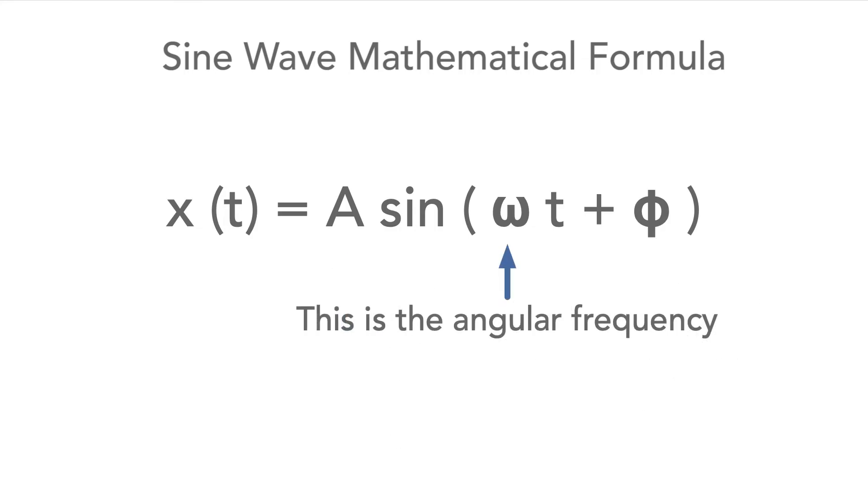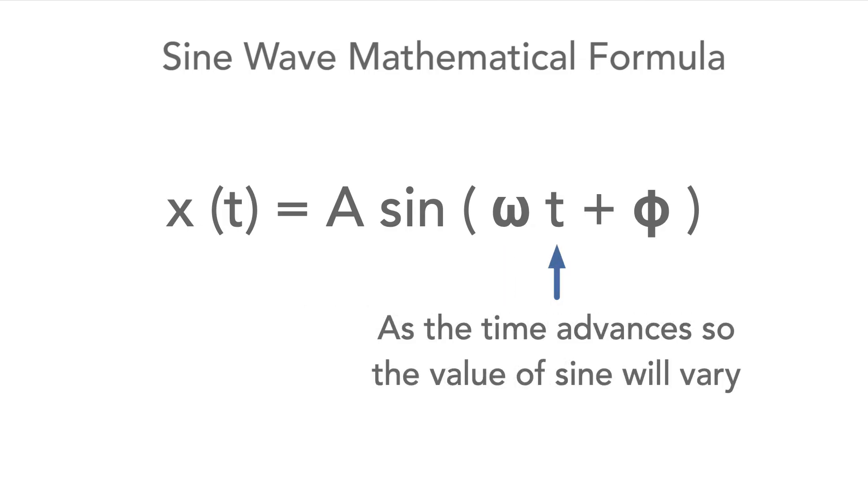Omega is the angular frequency and this can also be expressed as 2π times the frequency. This gives the instantaneous value at any position on the plot. As the time advances over the cycle, the value of sine will vary accordingly.